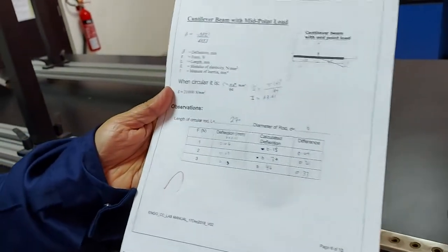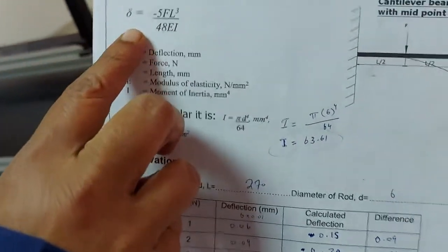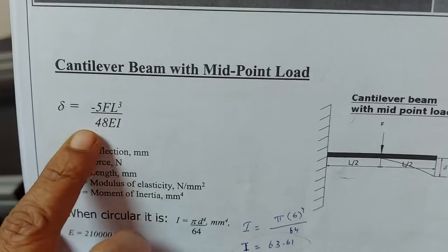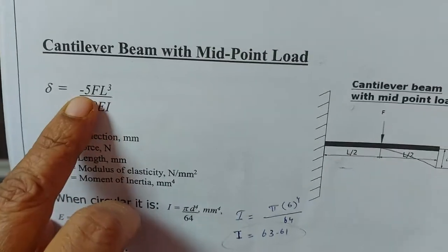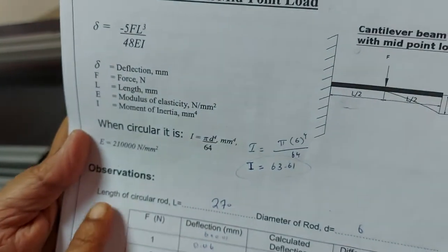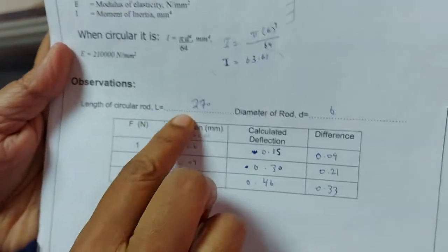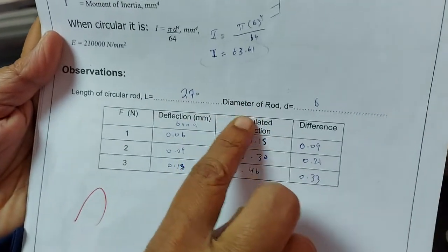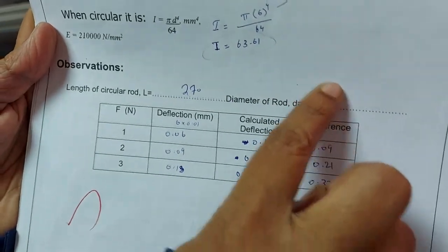All of you please have a look in the handout. So here this is the rule: del equal to minus 5FL cubed divided by 48EI, where F is the force what we are applying, L is the total length of the beam. Here the total length of the beam is 270 millimeters and the diameter of the rod is 6 millimeters what we have already measured.